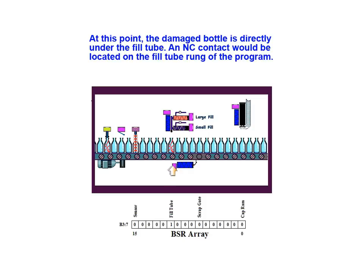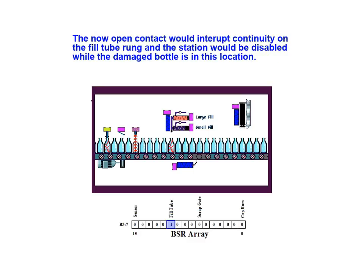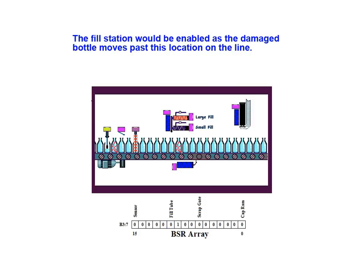At this point the damaged bottle is directly under the fill tube. A normally closed contact would be located on the fill tube rung of the program. This contact would have an address of B37-10 and would be opened as the bottle arrived, due to a 1 value now located at that address. The now open contact would interrupt continuity on the fill tube rung and the station would be disabled while the damaged bottle is in this location. The fill station would be re-enabled as the damaged bottle moves past this location on the line.